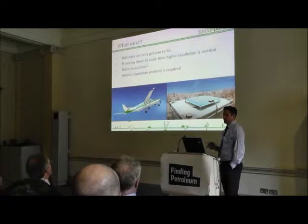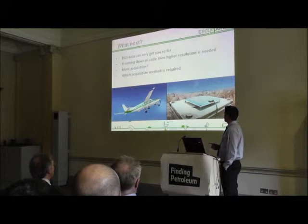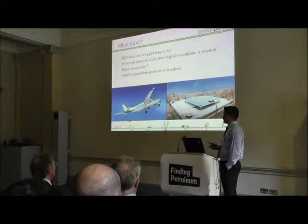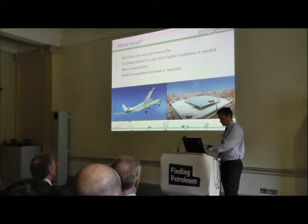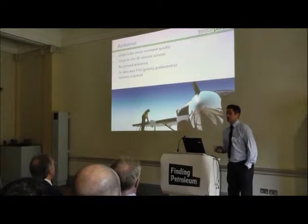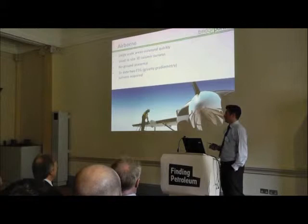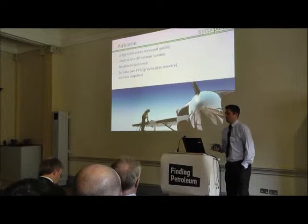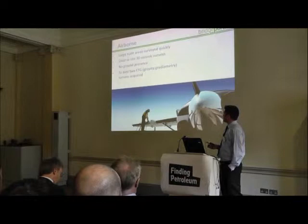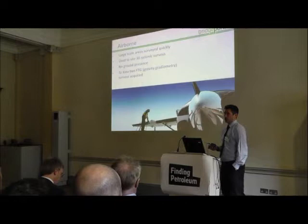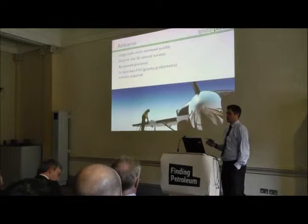So the question would be, what next? The BGS data will only get you so far because of the resolution it has. So if you're coming down in scale and a higher resolution is needed and you want to do more acquisition, the question is which method do you use — an airborne survey or a land survey? The pros of an airborne survey: you can certainly survey large areas very quickly, and it has certainly been used in other areas for siting 2D or 3D seismic surveys, which reduces ground presence. To date, as far as I'm aware, there have been FTG or full tensor gravity gradiometry surveys conducted onshore UK, which is a higher resolution gravity dataset useful when looking at shallower targets and shallower faulting.